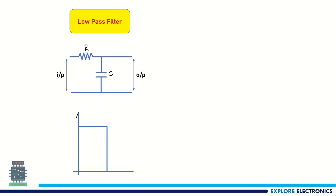If you look at the frequency response by taking amplitude on the Y-axis and frequency on the X-axis, we get an output like this for a low-pass filter. This point is called the cutoff frequency. Below this cutoff frequency, all the signals coming as input will be passed to the output — that is why the amplitude is higher here.